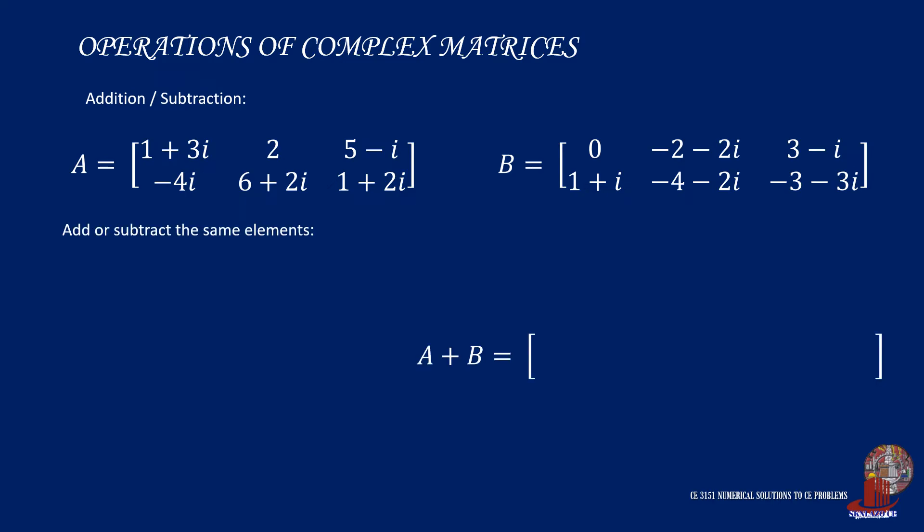Let's have A plus B for an example. For element 1,1, we add 1 plus 3i with 0 which gives 1 plus 3i.